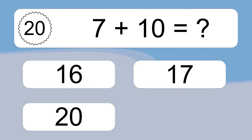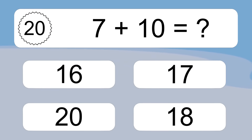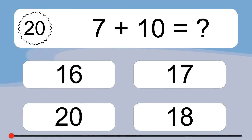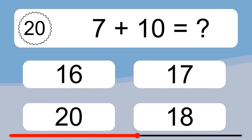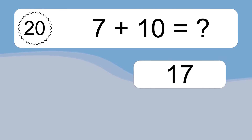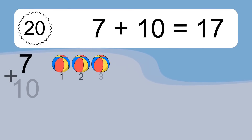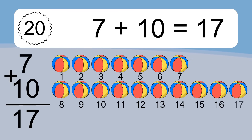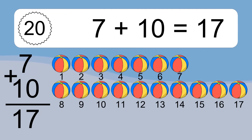7 plus 10 equals what? 1, 2, 3, 4, 5, 6, 7, 8, 9, 10, 11, 12, 13, 14, 15, 16, 17.